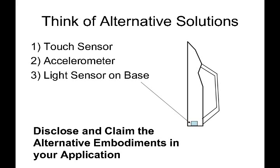What can you do to prepare for design around? One of the best ways is to think of all the alternative solutions that could accomplish your goal. The goal here is to shut off the iron after a period of inactivity. We want our claims to cover the concept of shutting off an iron after a period of inactivity, regardless of how the inactivity is detected. Even if we are only planning to build our irons with design number one using the touch sensor, if we can contemplate other designs, those can be included and claimed in our patent application. We can describe and claim the accelerometer design, and we can think of other designs such as design three, which includes a light sensor on the base — so when you stand the iron upright, the light does not reach the light sensor, and that starts the timer. If the iron is left in the upright position, within a few minutes the iron shuts off.